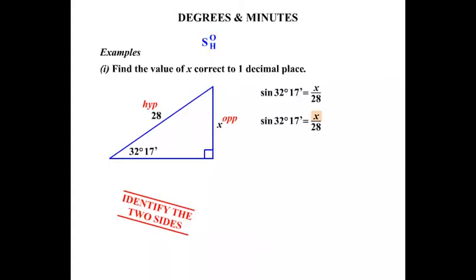Now let's rewrite that. We're trying to get x by itself, so we're going to get rid of the 28. It's being divided by that 28, so we need to multiply both sides by that 28. They will cancel down on the right side. So we got the x by itself, terrific. 28 times the sine of 32 degrees, 17 minutes. Let's write that down. And then when we use the calculator to enter that, we get that x equals 15.0. It's been rounded off to one decimal place.